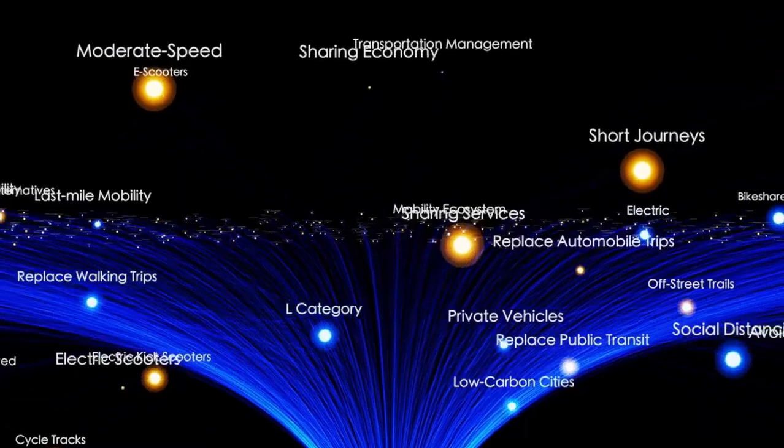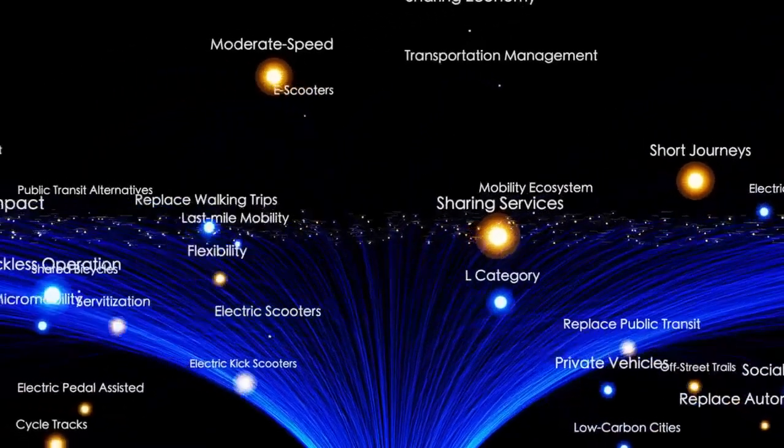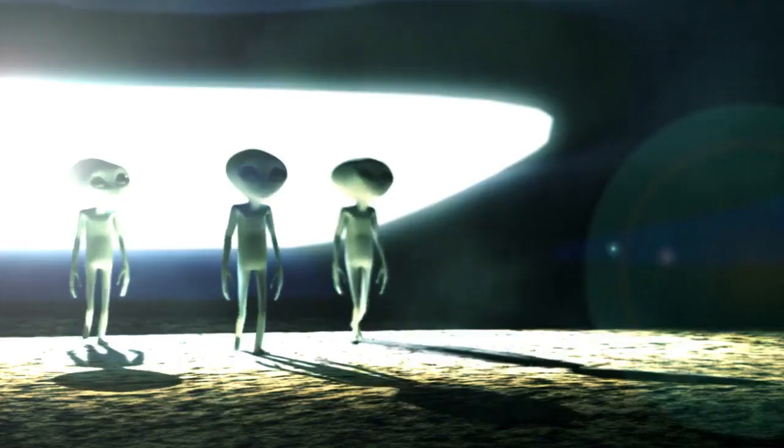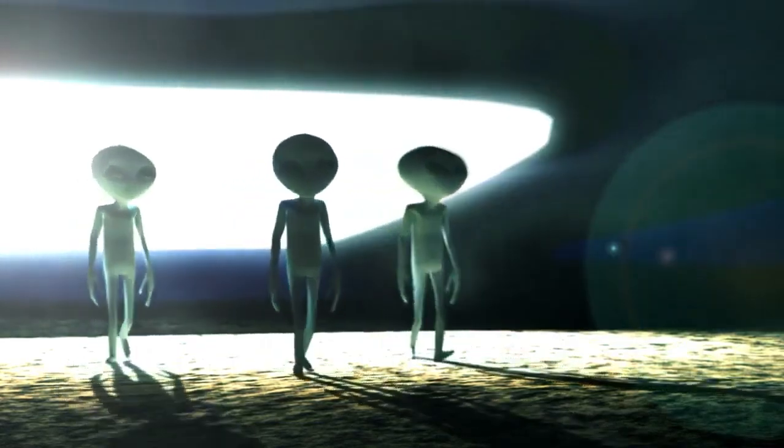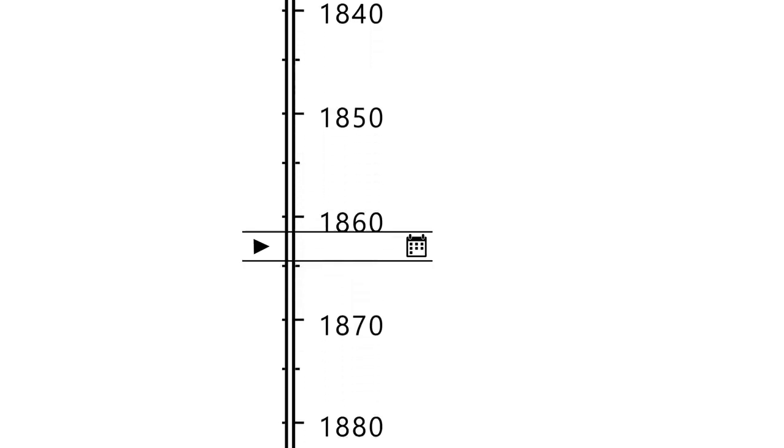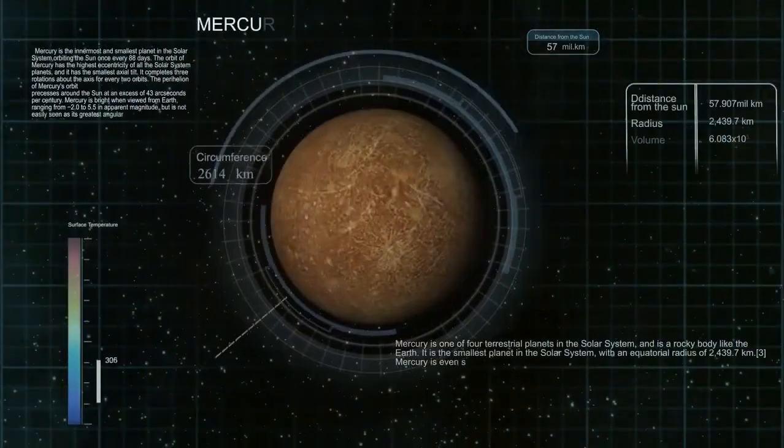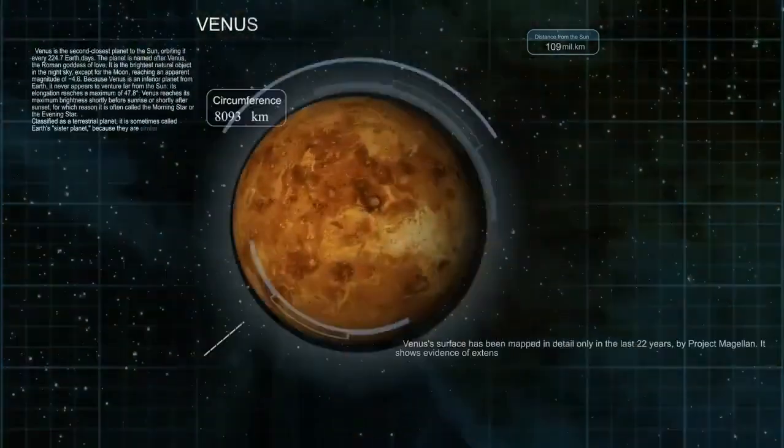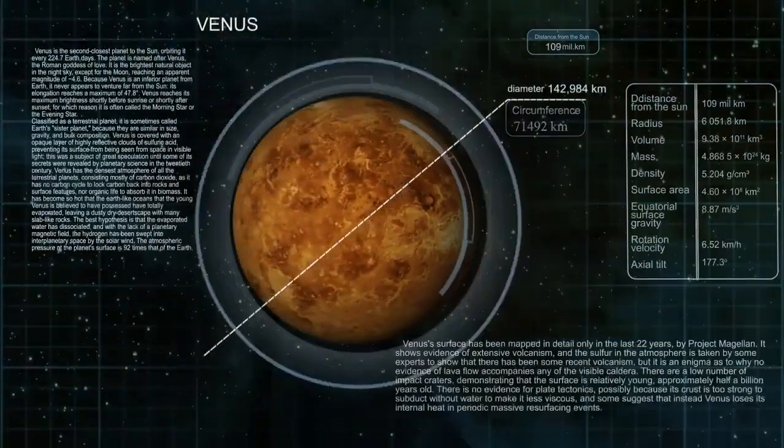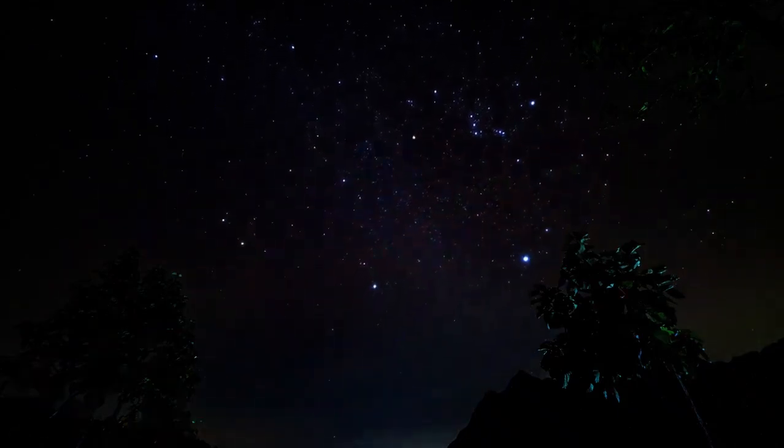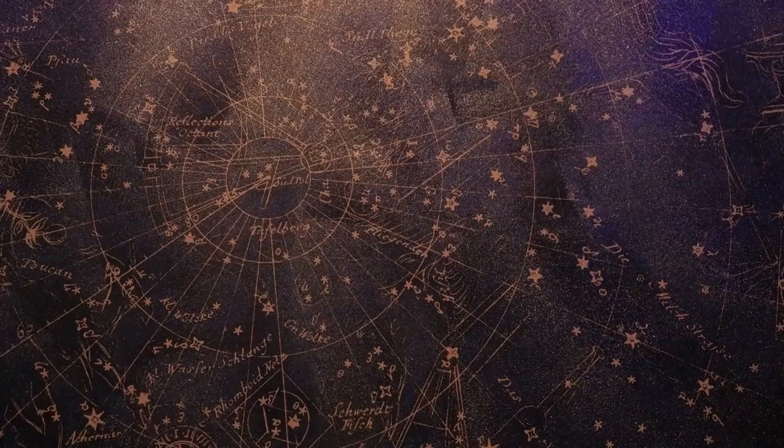As we delve deeper into space, we encounter enchanting constellations, patterns of stars adorning the night sky. These celestial artworks have fascinated humanity for centuries, guiding our eyes and sparking our imagination. One awe-inspiring constellation is Hydra, the largest of the 88 recognized constellations, spanning over 100 degrees in the night sky. Hydra hosts a multitude of stars, with the brightest being Alfred, a splendid orange star about 127 light-years away.